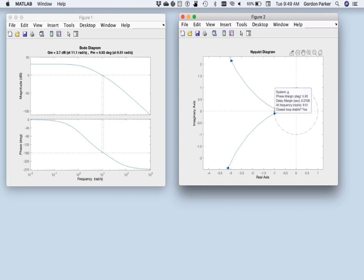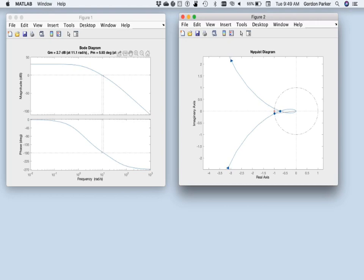But it also has these two blue dots on here. If I hover over this dot where we cross the unit circle, it tells me all sorts of good things. Here we can see that the phase margin is 5.93 degrees, and it's at a frequency, the crossover frequency of 9.51. If I look over here at the Bode plot, that is exactly what it tells me. Phase margin 5.93 at 9.51. How cool is that?